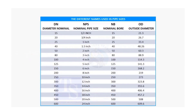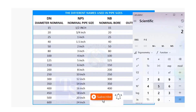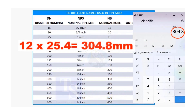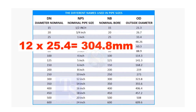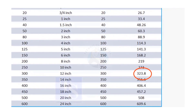Let us check this. To calculate the OD of the 12 inch pipe, multiply 12 by 25.4. The answer is 304.8 millimeters. But the actual size is 323.8 millimeters.